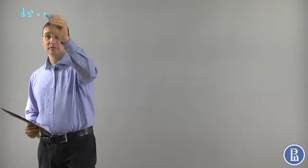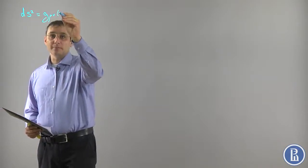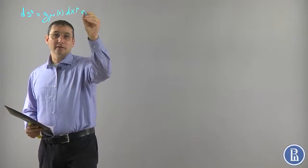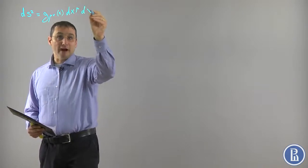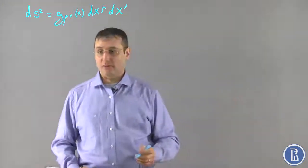We have to build up invariants from the metric to begin with. From the metric tensor — we have at our disposal the metric tensor — and we want to build up invariants which will compose the action.